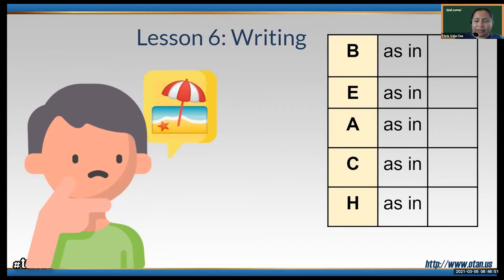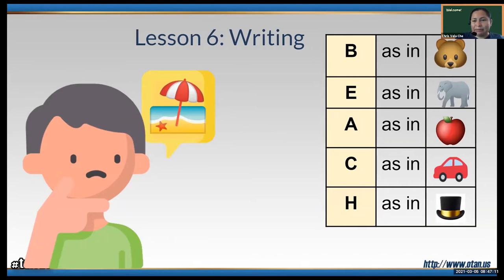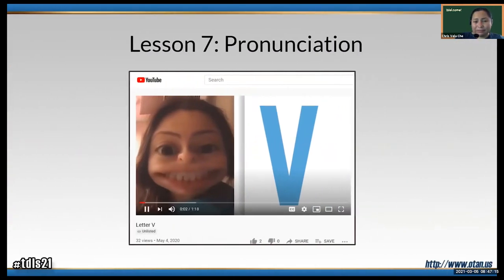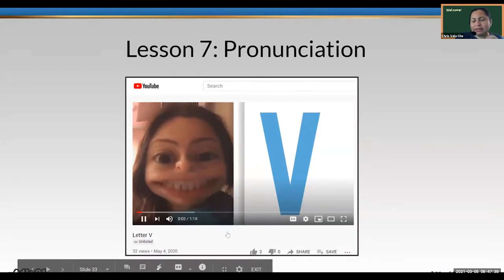Another thing we do is practice spelling their first and last names. We practice with simple words — for example: 'beach, B as in bear, E as in elephant, A as in apple, C as in car, H as in hat.' Pretty fun activities with tons of pictures for pronunciation practice. I've also created videos with Adobe Spark — a very unusual video, but they laugh and enjoy watching. This is a video of how to pronounce the letter V, which many of my students have trouble with.